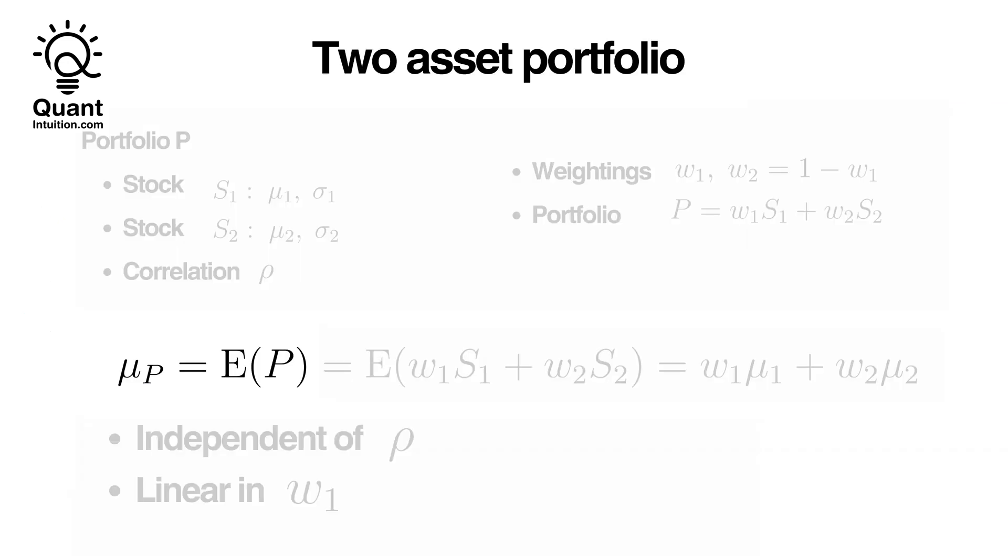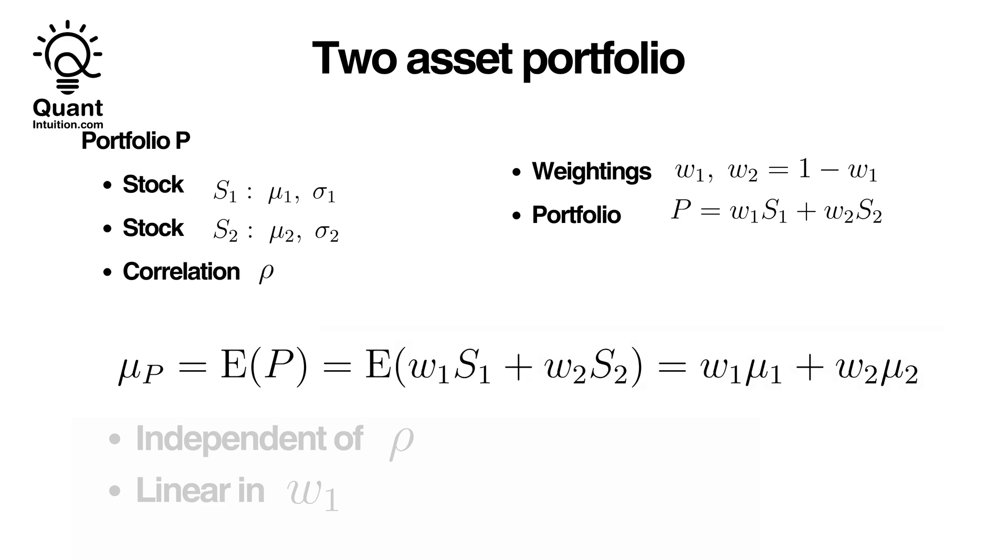Let's now take our generalized two-asset portfolio and calculate the expected value muP of the portfolio. On the top, you can see the values from the previous slide. The expected value, muP, is the weighted average of the stocks S1 and S2. It falls somewhere between mu1 and mu2 and is independent of rho, showing a linear relationship with W1.